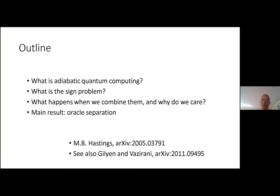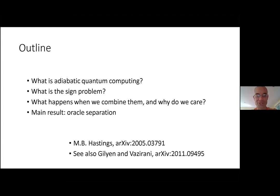I'm going to talk about: what is adiabatic computing, what is quantum computing, what is the sign problem, what happens when we combine adiabatic quantum computing and the sign problem, and why we care about putting the two together. Then I'll talk about the main result — an oracle separation, which is a term from computer science that I'll explain. This combines things from condensed matter, computer science, and quantum information.